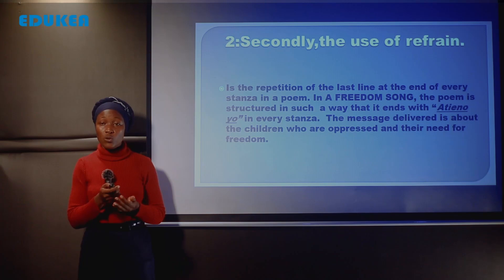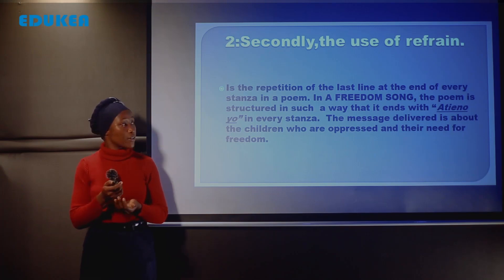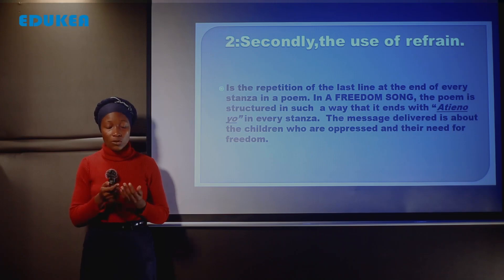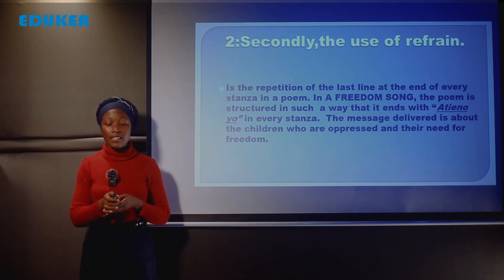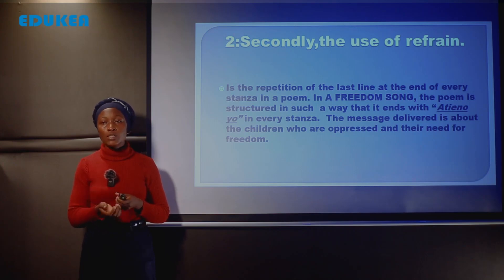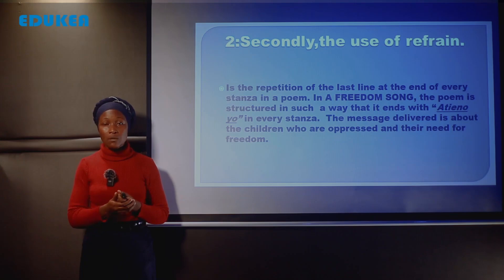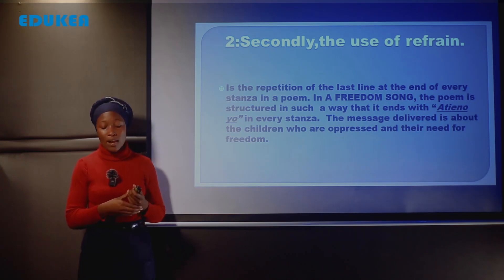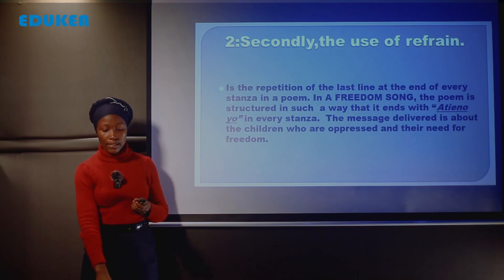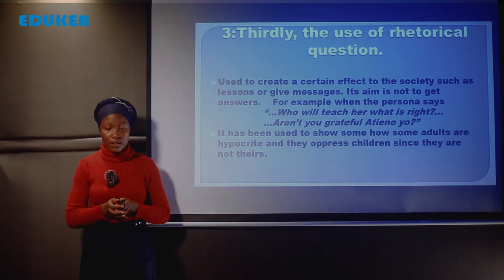There is no room for these children to get their rights. Atieno is among those girls who suffer from oppression — working but having no freedom to pursue education or do what they wish, as other children do. This is among the messages derived from the use of poetic devices.